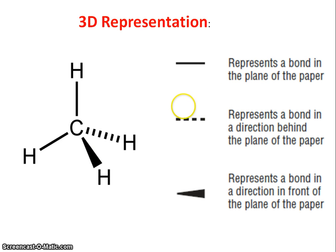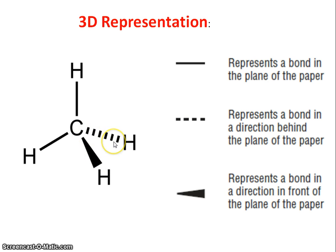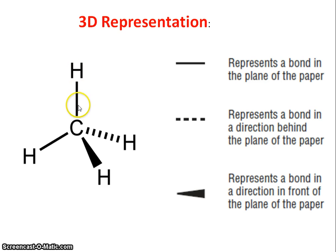Just to remind you about the 3D representation for molecules: where a bond is coming towards you, that's shown as a long triangle. If there's a bond behind the molecule, that's shown as a dotted line, with ordinary lines showing bonds in the same plane as the paper.